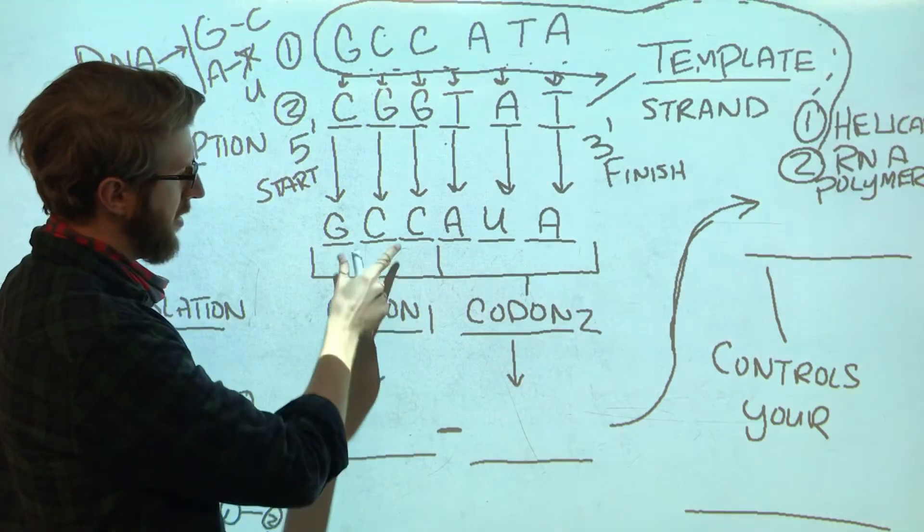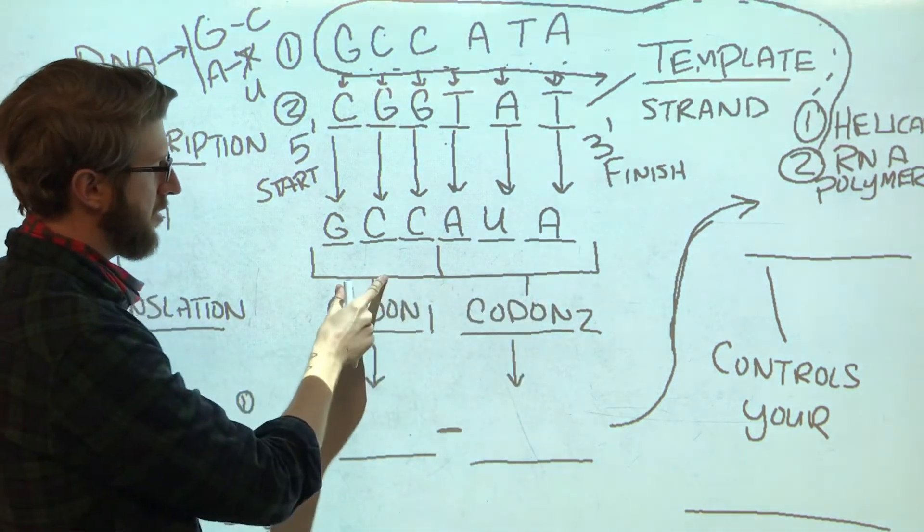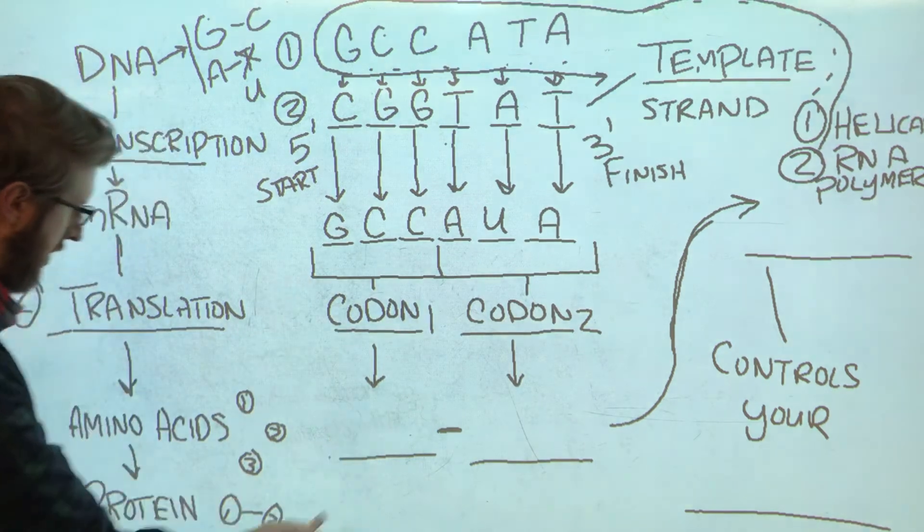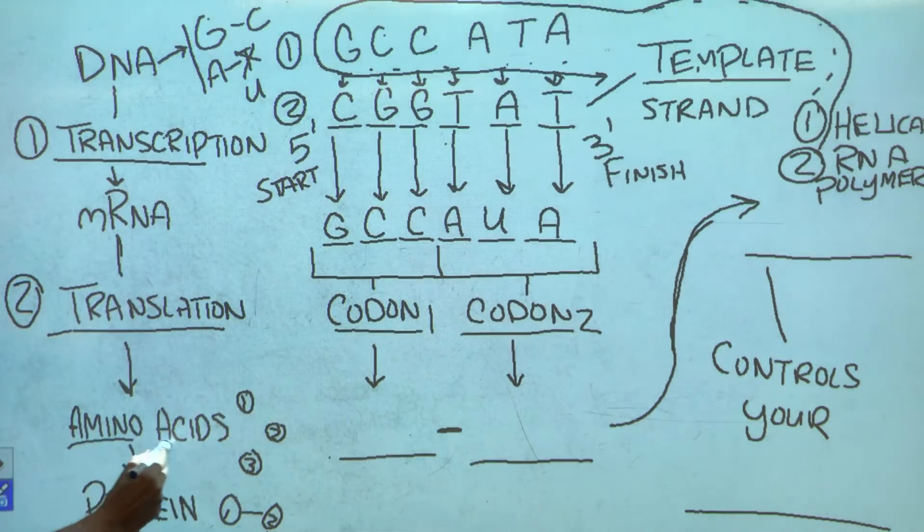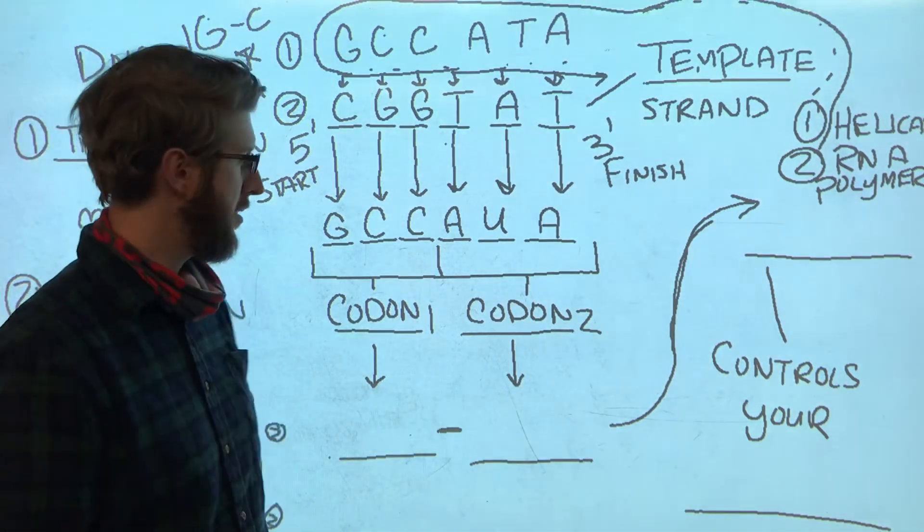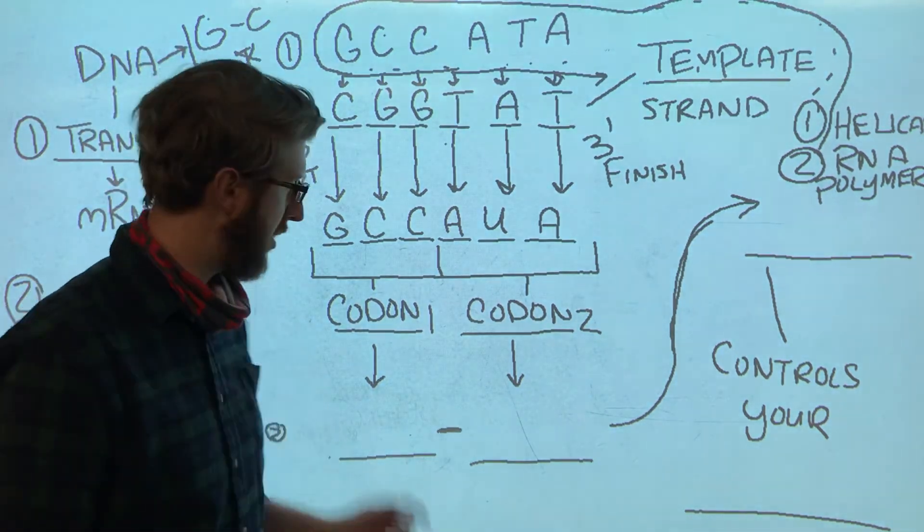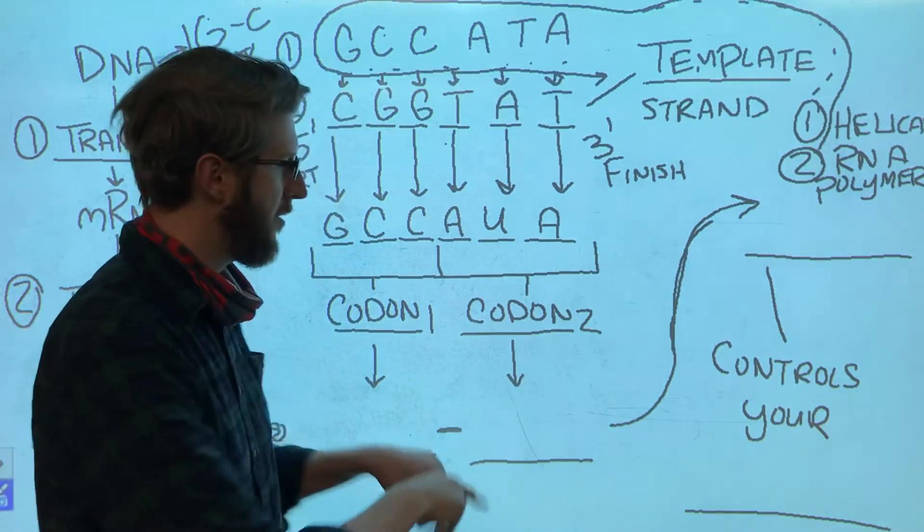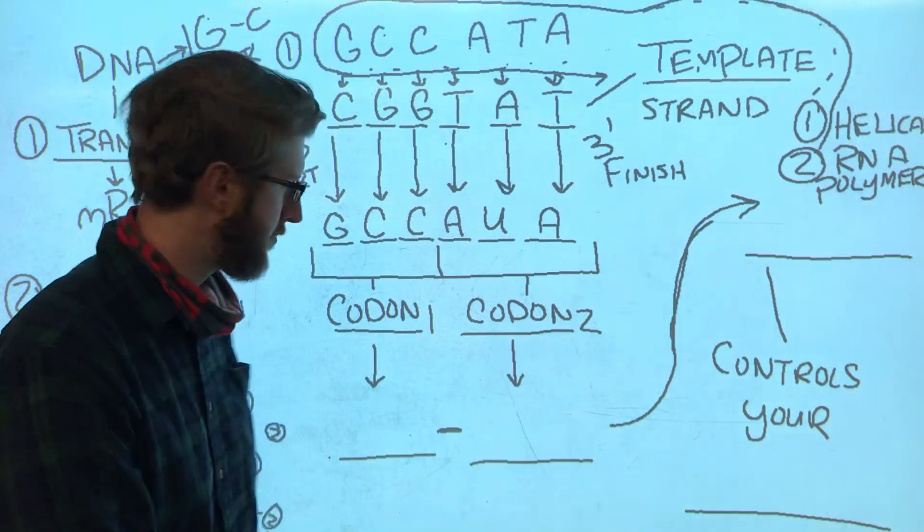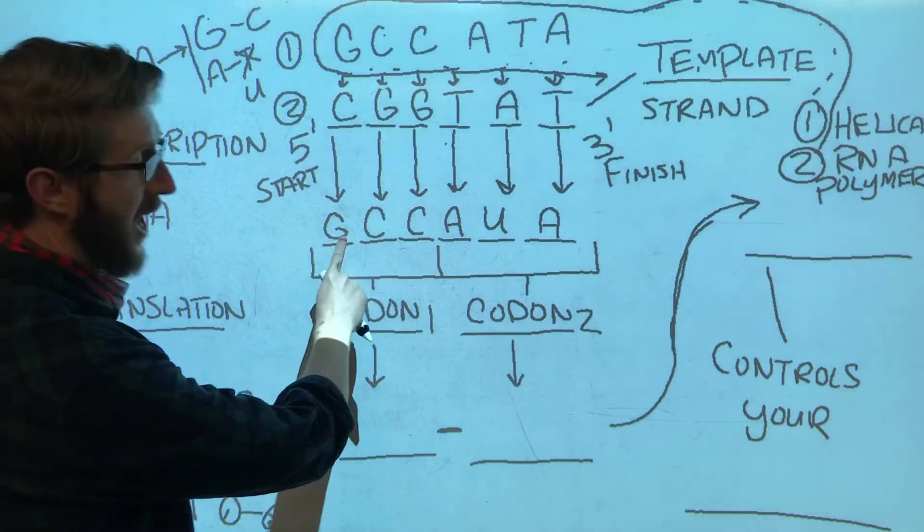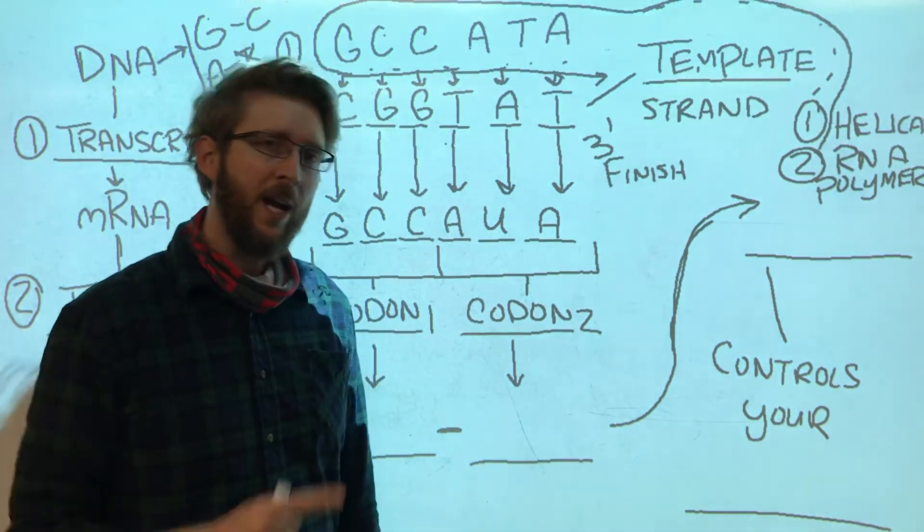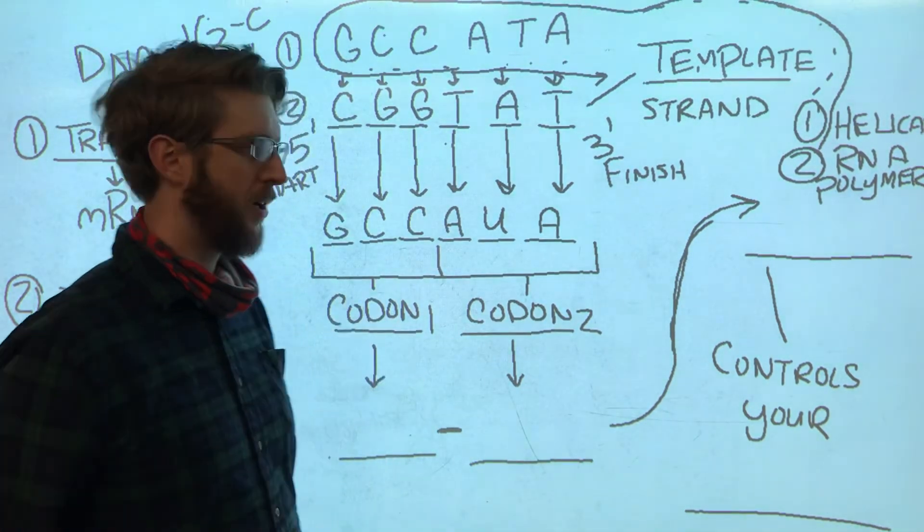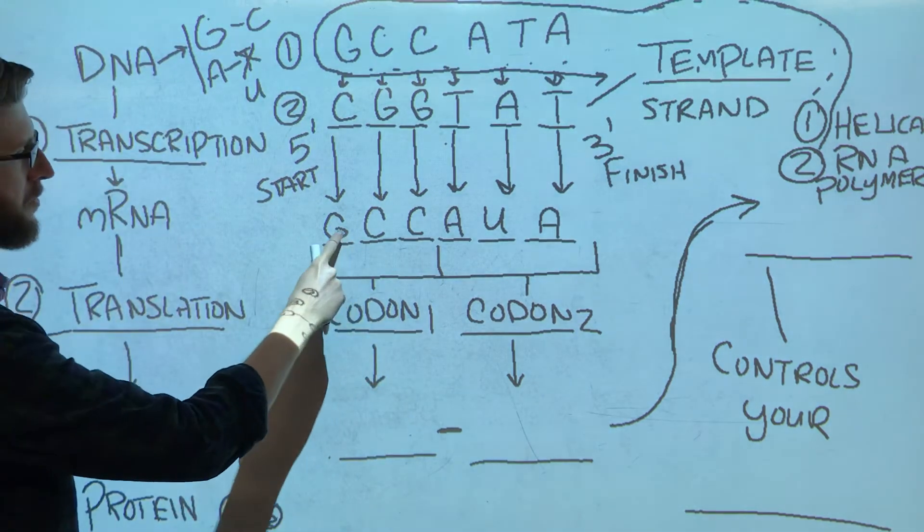Now each codon tells us to make a particular amino acid, which we are then going to put together with the other amino acids that the other codons tell us to make and make a protein. How do we do that? Well, that's where our handy-dandy codon chart comes in.